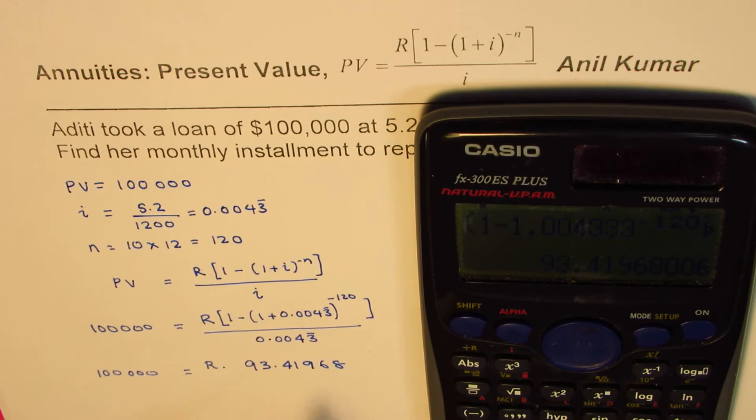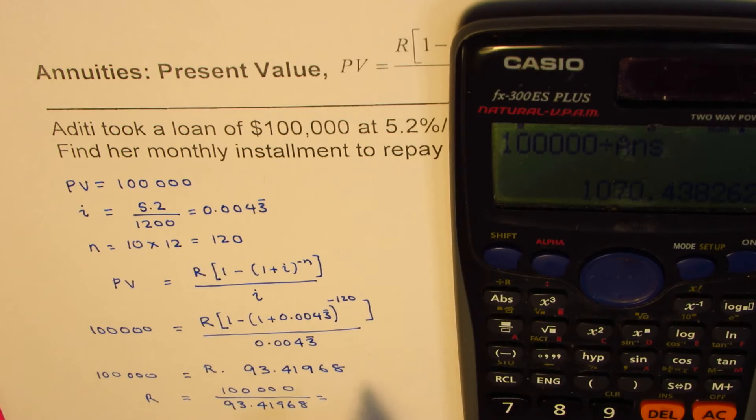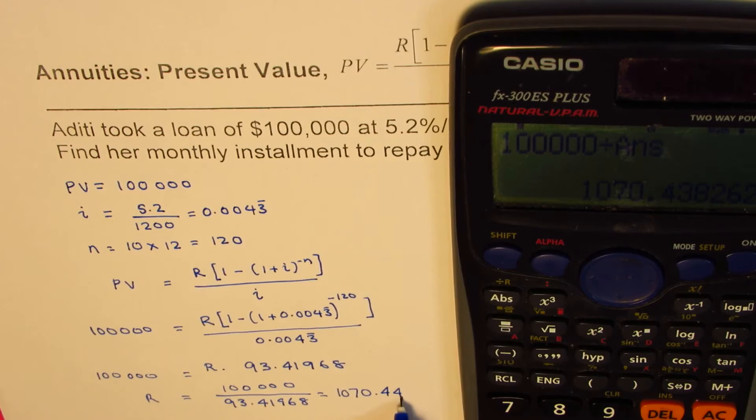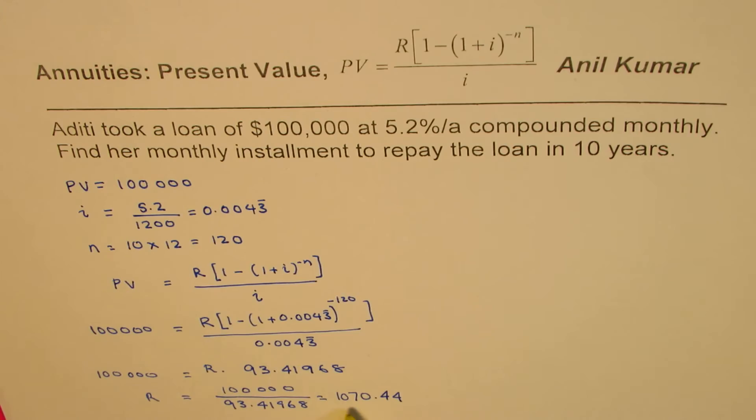That gives us R times 93.41968. So R equals 100,000 divided by 93.41968. We'll do 100,000 divided by our answer which equals 1070.44. So we get the value of R.